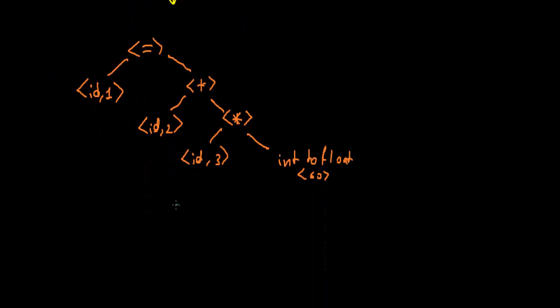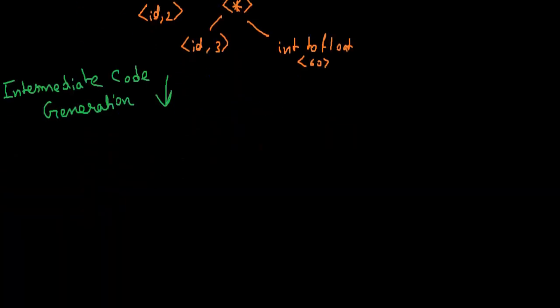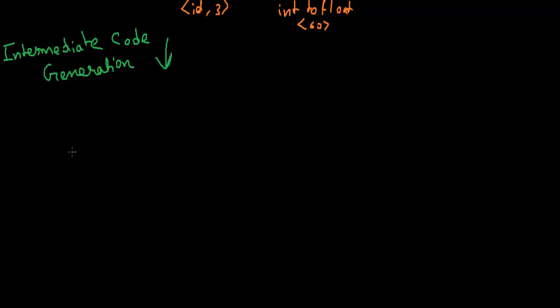Intermediate code generation. Let's see what will be generated here. We'll just convert them into code. So t1, suppose you're taking any random variable, int to float, so that 60 will be converted into this.